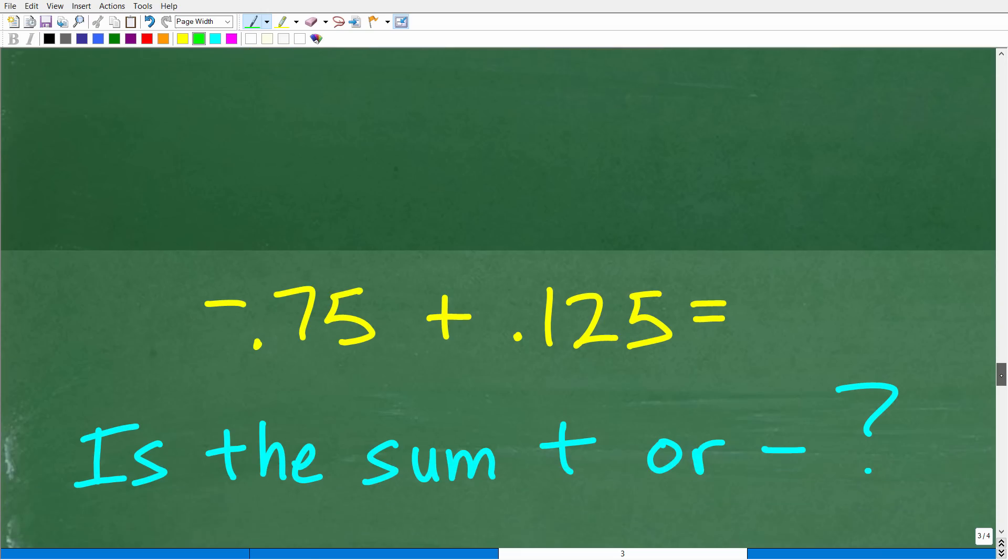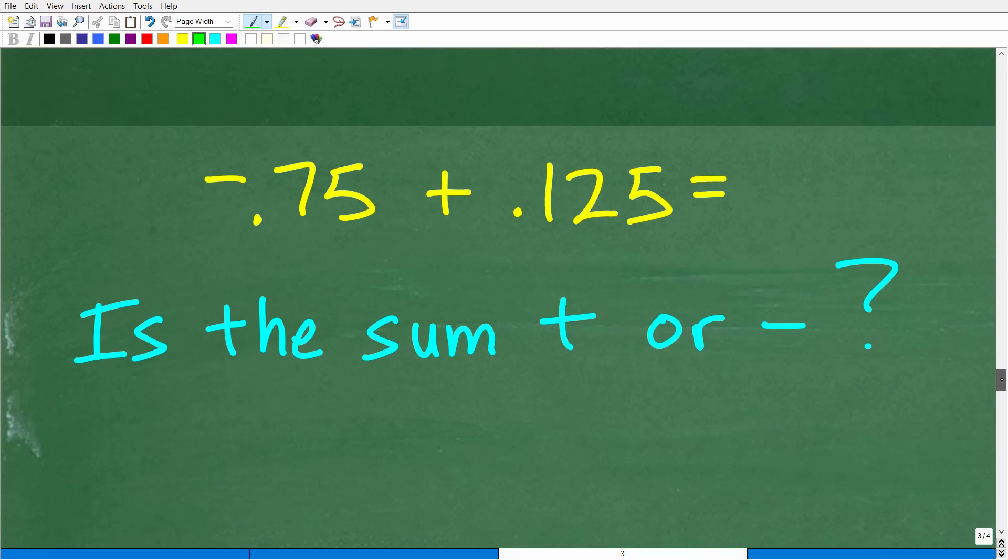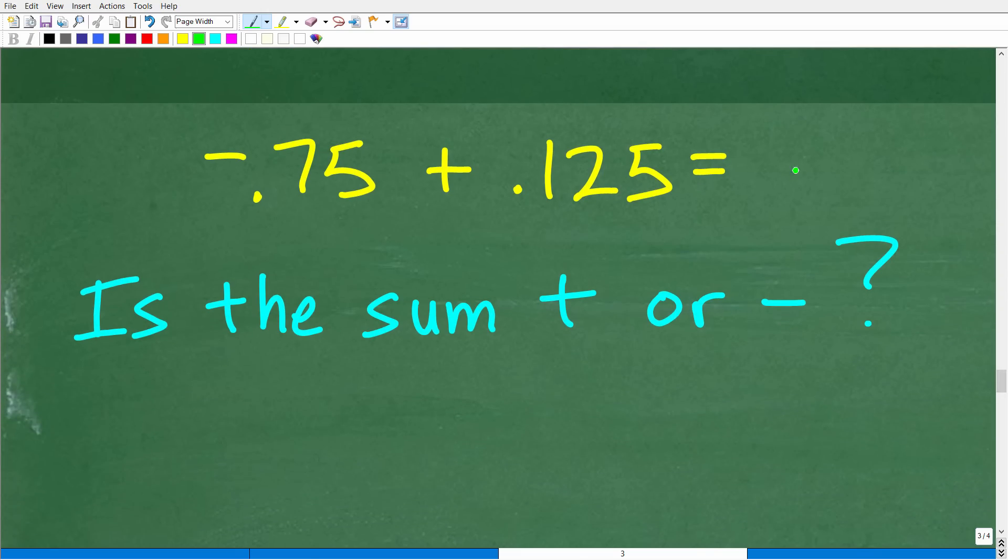Now, we know from doing this problem originally or dealing with fractions that our answer is going to be negative. But how can we determine that by looking at these decimals? Well, just kind of look at the absolute values of these decimals. In other words, forget this negative sign here. And which is the larger decimal? Well, we have point seven-five and point one-two-five. Point seven-five is greater than point one-two-five.